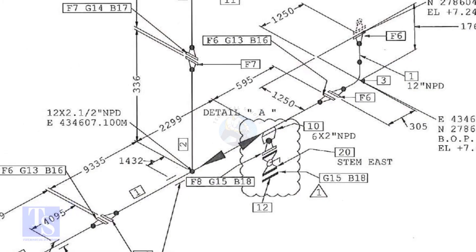The center of the weldolet is 595 millimeters away from the face of the flange. Now, we are going to mark this distance on a pipe with a flange fitted on it.